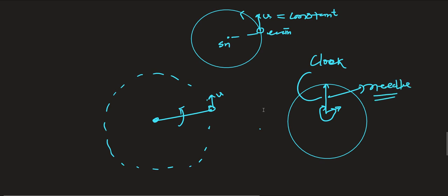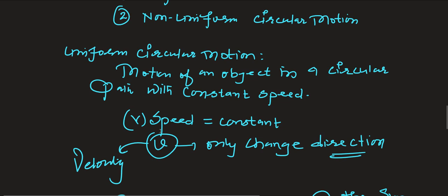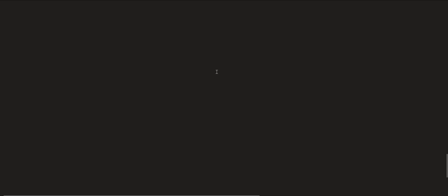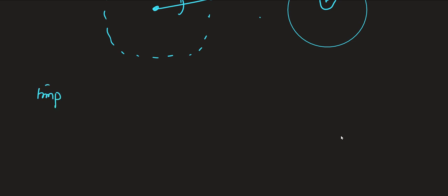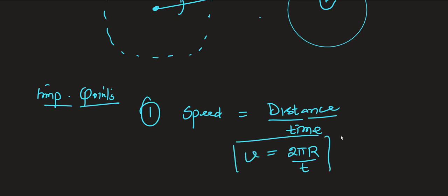Dear children, if an object is moving in a circular motion having constant speed but velocity is changing its direction at every point — that type of motion is called uniform circular motion. Now, how to calculate the speed in uniform circular motion: speed is distance upon time, that is 2πr upon time t. This is the formula for speed in circular motion. When one revolution is done, the total distance covered is the circumference, that is 2πr. So speed = 2πr / t.